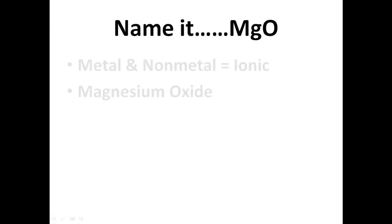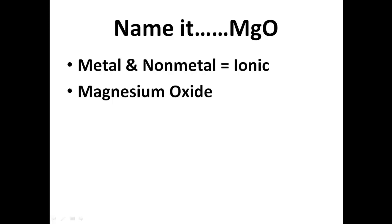Take a second, try to name this — it's something we've learned in the past. Can you name this compound MgO? Press pause, name it, and see if you get it right. The name is magnesium oxide. The first element is named first — the leftmost element on the periodic table, magnesium — and oxygen gets changed to oxide.